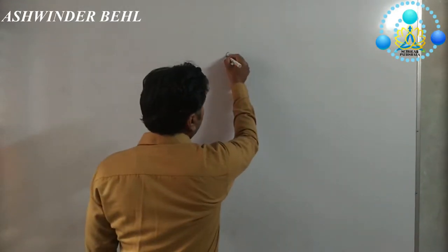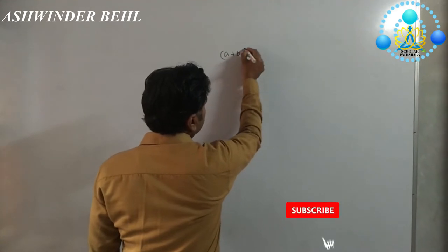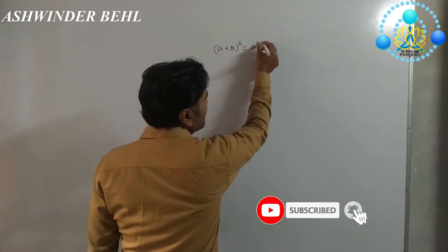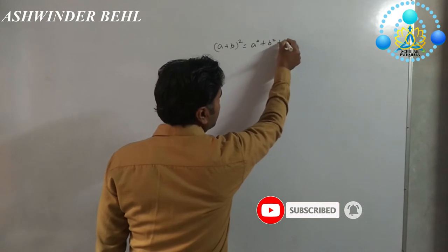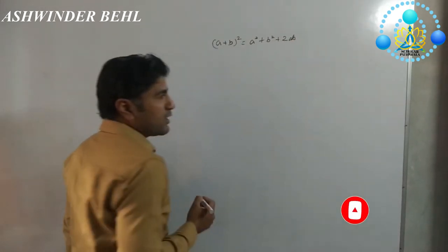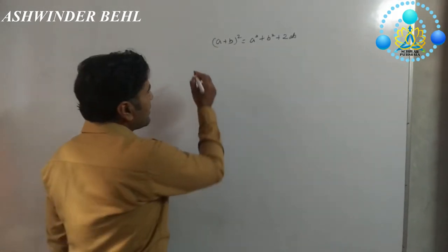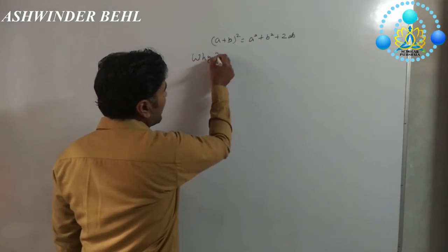Today we will discuss the identity A plus B whole square, that is A square plus B square plus 2AB. We know this very well, but the question is why.